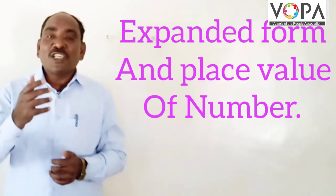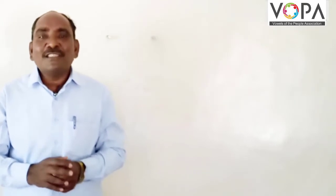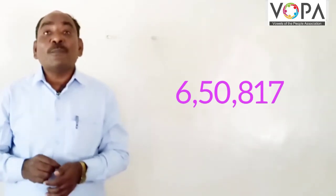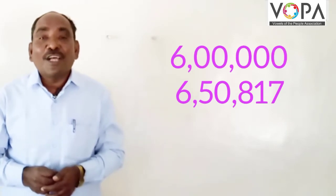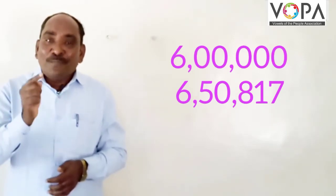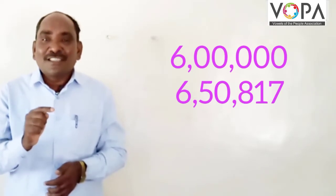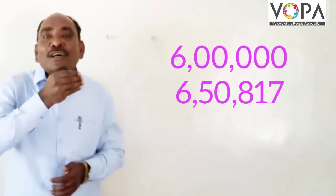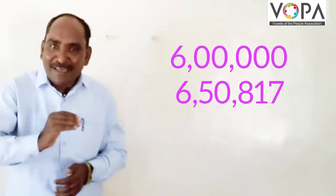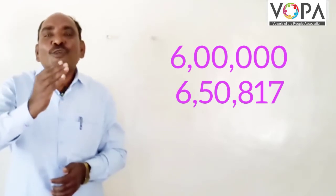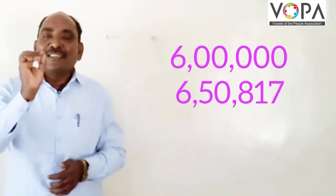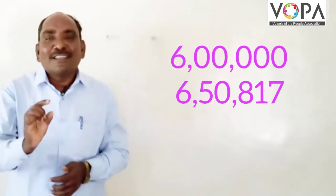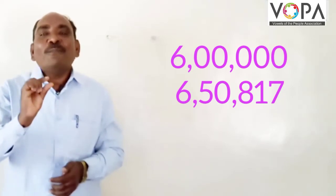Suppose the number is six lakh fifty thousand eight hundred seventeen. We have to give the place value. What is the place value of six? At that time you write six, and in front of it you give zeros — five zeros — and you get the place value of six, that is, six lakh.